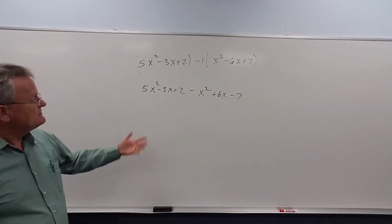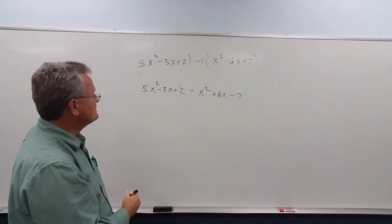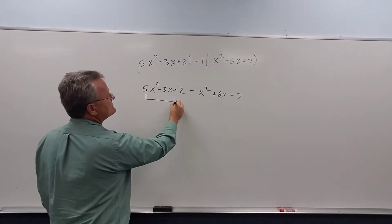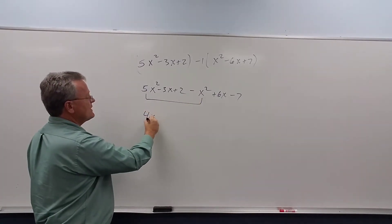Now we just combine like terms like we did in the last video when we added polynomials. 5x squared plus negative 1x squared is 4x squared.